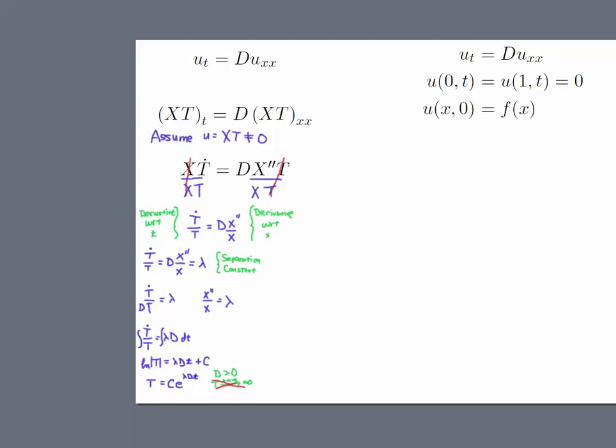If T is going off to infinity, we don't want that to happen. Physically, we don't want our temperature to go off to infinity, so we have to make some assumptions about that lambda. We're going to assume that lambda is less than 0, and the way to ensure that is I'm going to set lambda equal to minus mu squared.